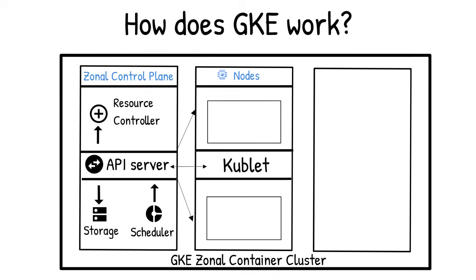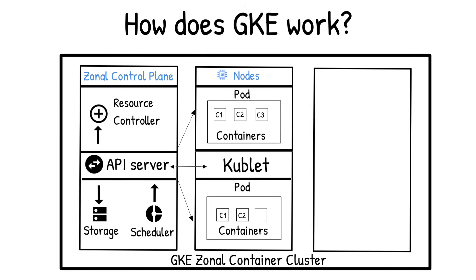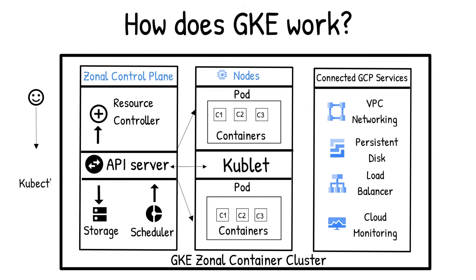Pods are the smallest, most basic deployable objects in Kubernetes and contain one or more containers. Pods also contain shared networking and storage resources for their containers.